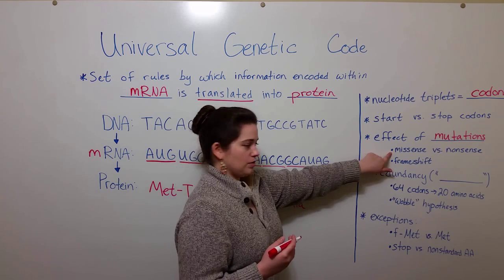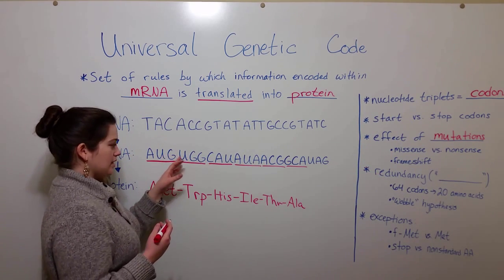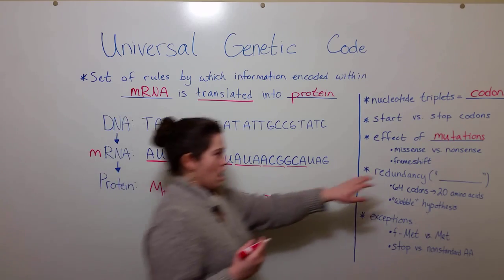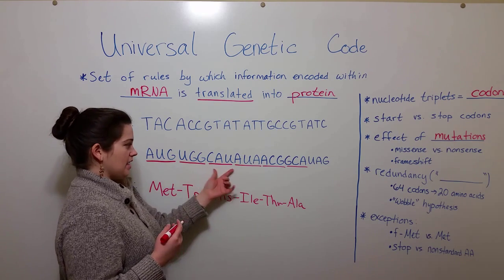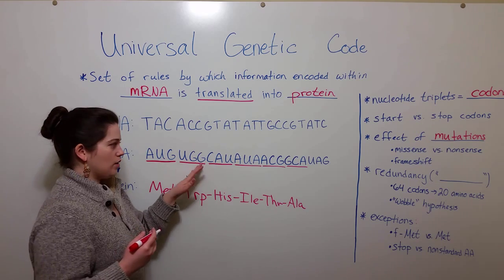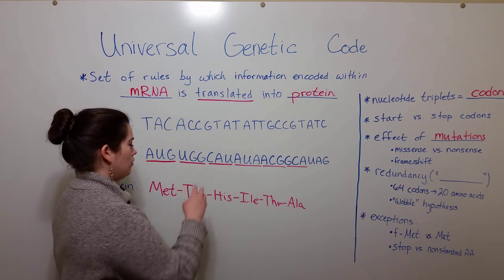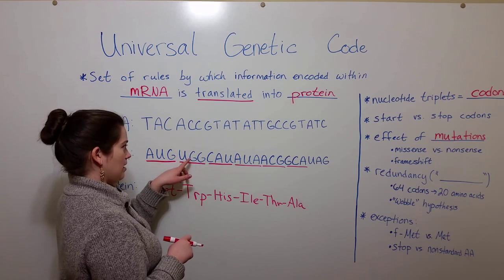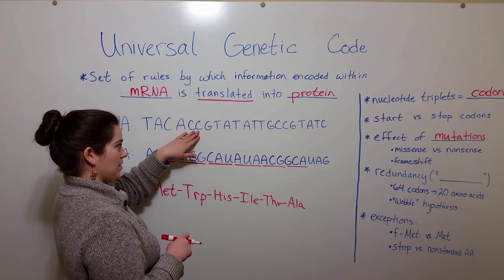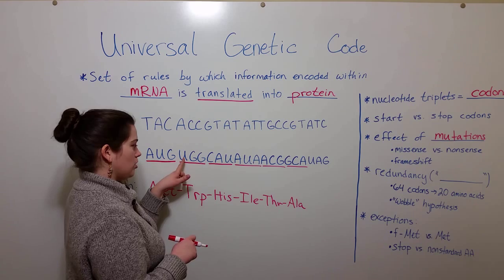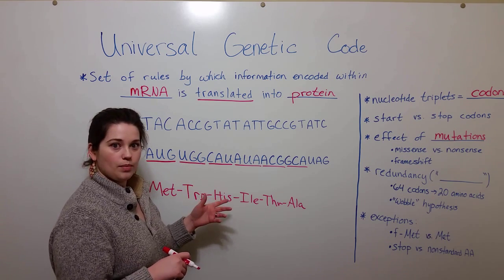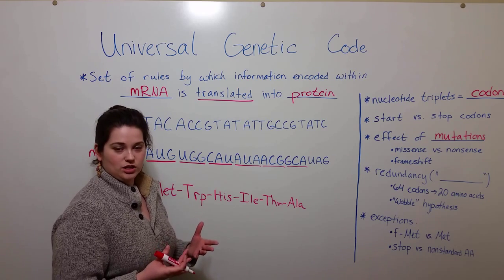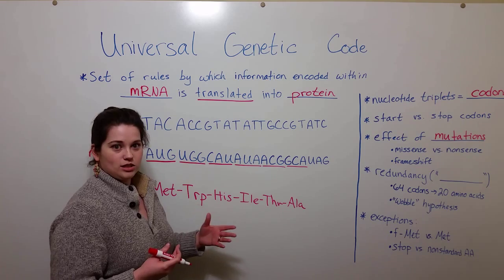In a missense mutation, the nucleotide changes so that a different amino acid is plugged into the polypeptide chain. A nonsense mutation is when a codon changes in such a way that rather than coding for an amino acid, it codes for a stop codon. For example, UGG codes for tryptophan, but if a mutation changed this G to an A — changing it to UGA, which is a stop codon — we would have an early truncation resulting in a truncated polypeptide because translation was terminated too early.